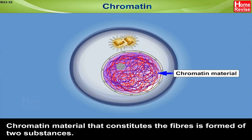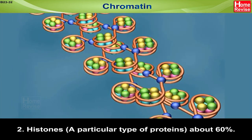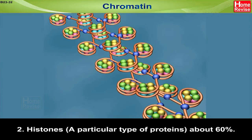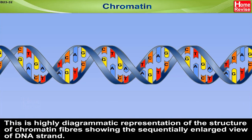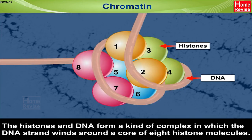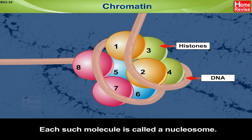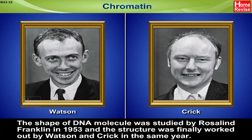Chromatin: The chromatin material that constitutes the fibers is formed of two substances: DNA (Deoxyribose Nucleic Acid) — about 40% — and histones, a particular type of protein — about 60%. This is a highly diagrammatic representation of the structure of chromatin fibers showing a sequentially enlarged view of the DNA strand. The histones and DNA form a complex in which the DNA strand winds around a core of eight histone molecules; each such unit is called a nucleosome. The shape of the DNA molecule was studied by Rosalind Franklin in 1953, and the structure was finally worked out by Watson and Crick in the same year.